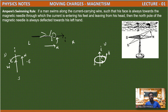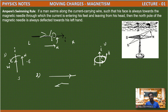By using this Ampere swimming rule we can find clearly — just by imagining the deflection of the north pole of the needle. One more example: here the direction of current is in this direction. Let us take a magnetic needle — this is our north pole. The current is flowing like this, so in which direction does it deflect? It deflects towards west.